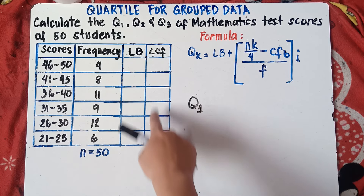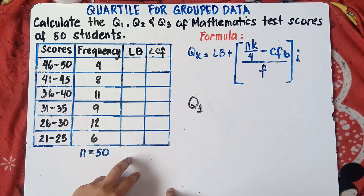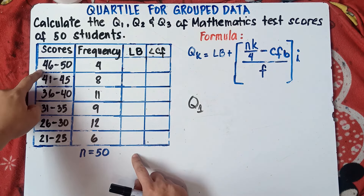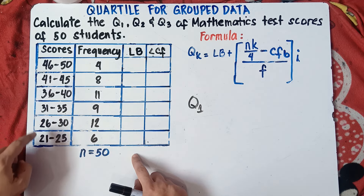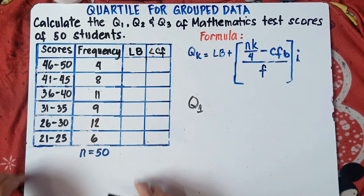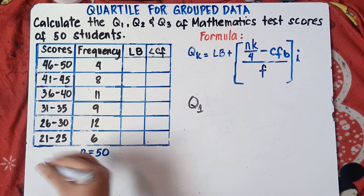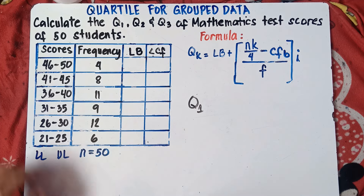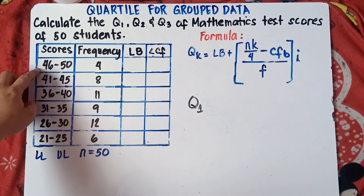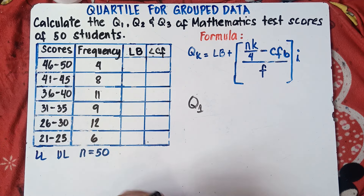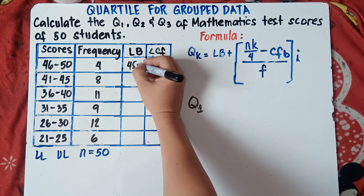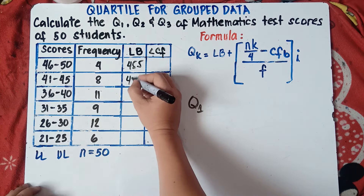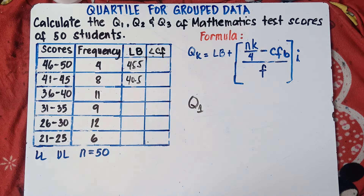Let's find LB and less than CF first. To find the lower boundary class, simply subtract 0.5 from the lower limit. So 46 minus 0.5 is 45.5, and 41 minus 0.5 is 40.5. That's how you find the lower boundary.